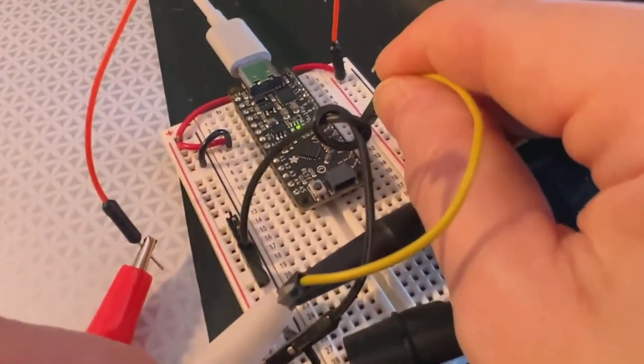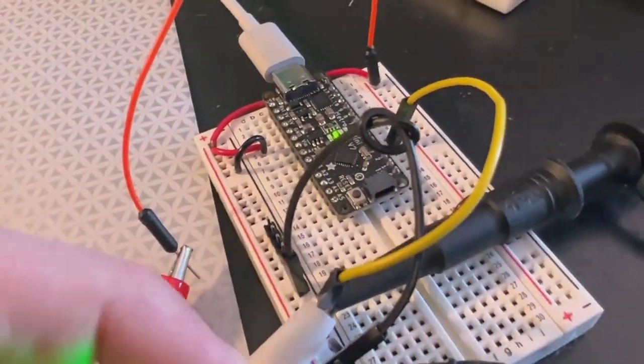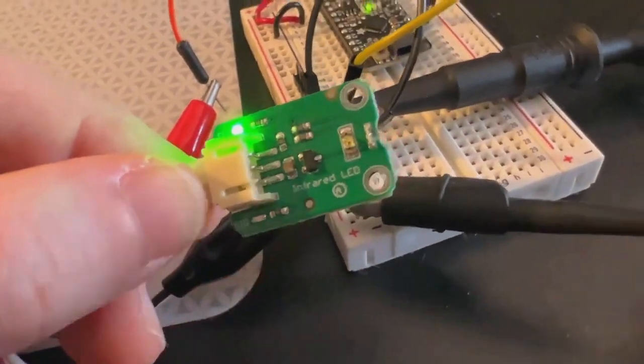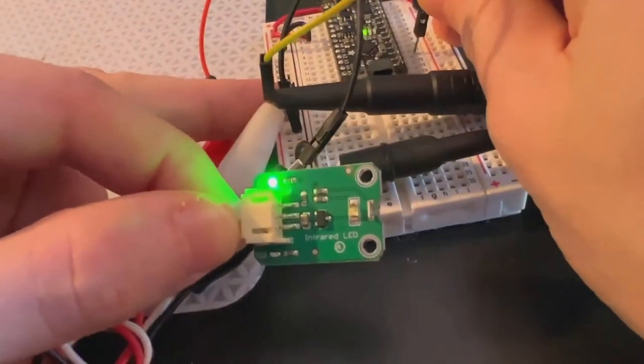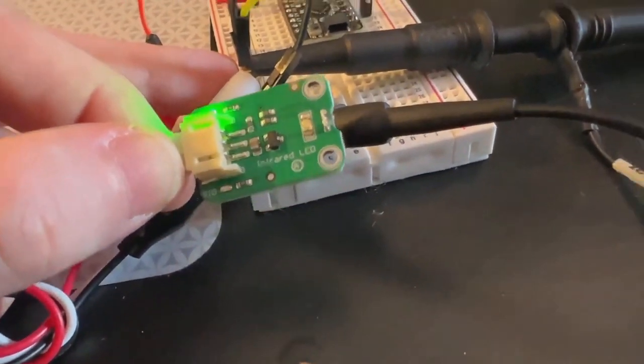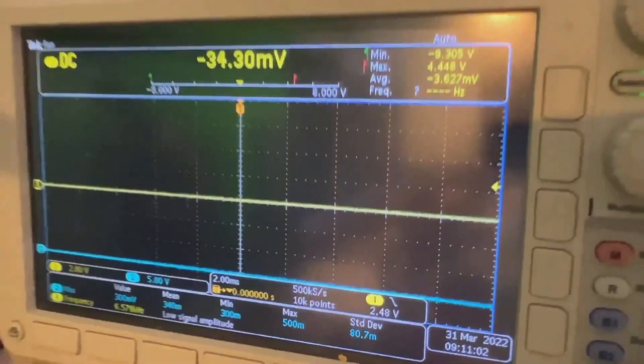And then I have it hooked up here to a Metro Mini, and you can see when there's a pin A3—when an IR signal is sent out, this little LED goes off, and you can see it on the scope as well.